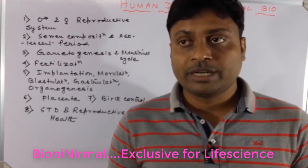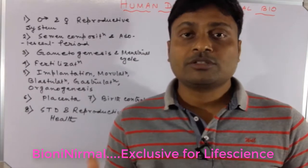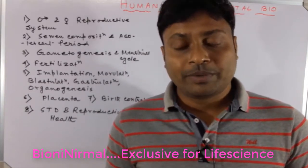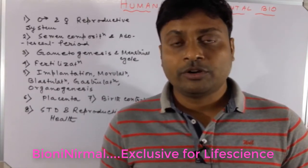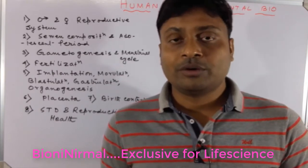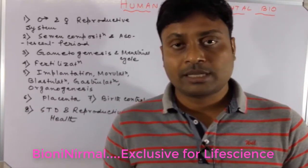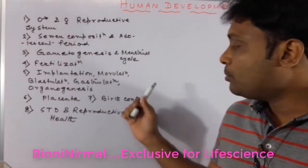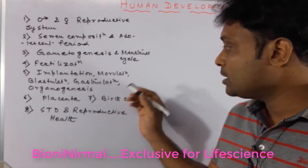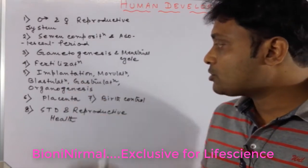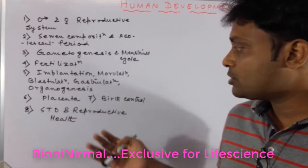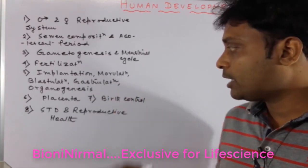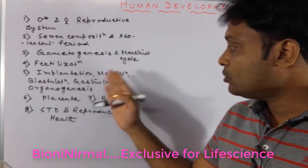Next is implantation — the fertilized ovum is implanted into the uterus. Progesterone plays a crucial role in implantation. Then comes morula formation, blastula formation or blastulation, gastrula formation or gastrulation, and organogenesis — all of these will be important.